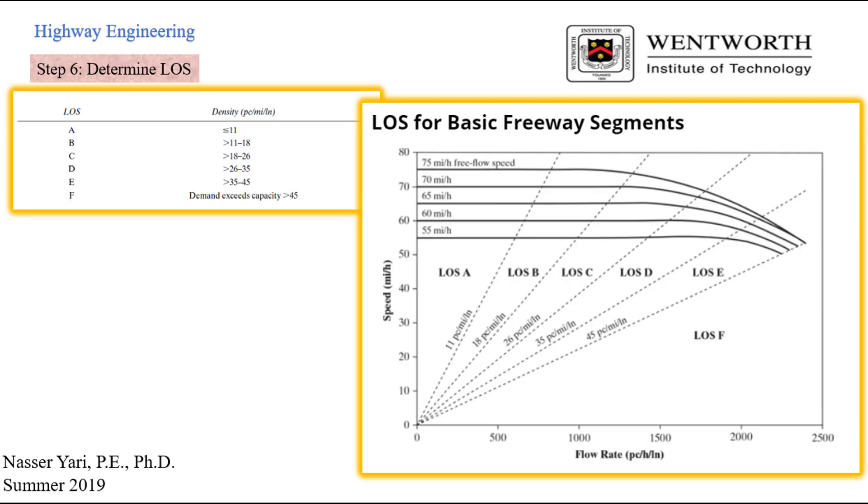And we know level of service is we can use the chart or we can use a table. And for example, level of service A is less than 11, and so on and so forth. And level of F, which is basically everything that we don't want, it's more than 45.